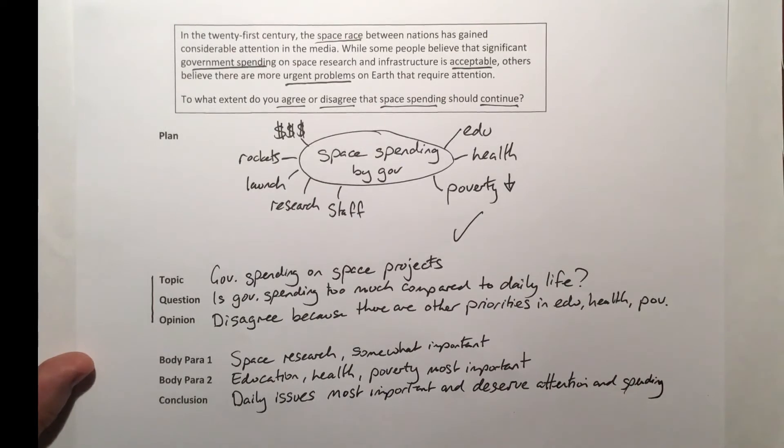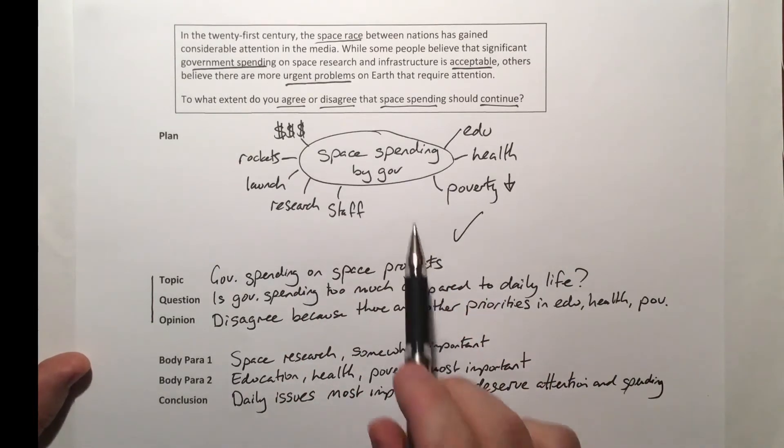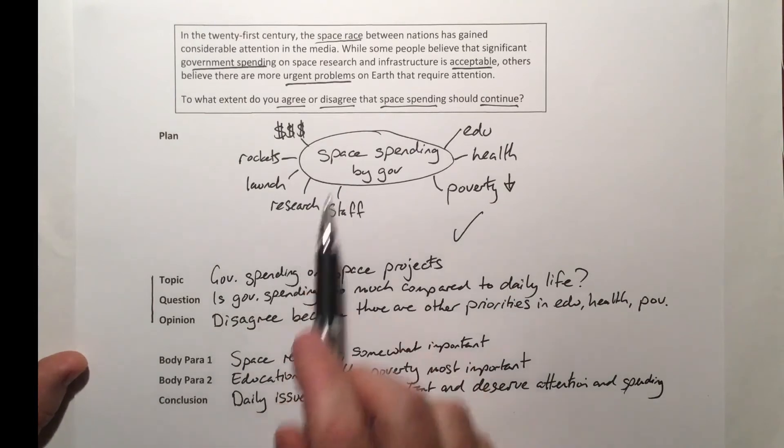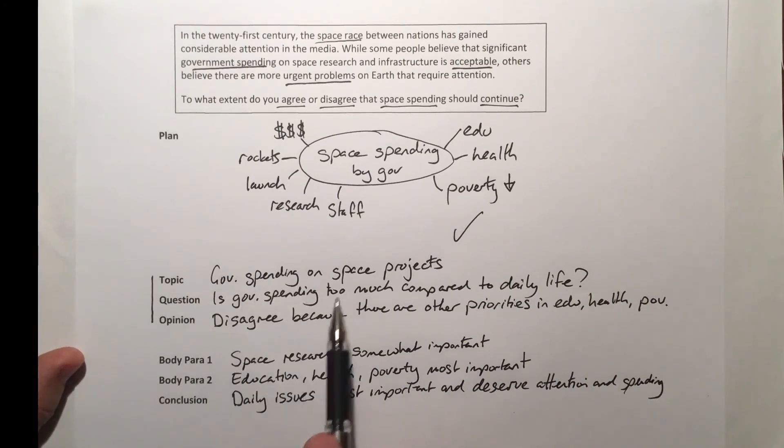There we go, that's quite a neat structure. I've spent a little bit of time planning. When I'm planning, I would probably just do this part and then write my introduction based on my understanding. I probably don't need to write out all of this, but if you feel like you need to or you feel like it's important to understand what the topic, question, and opinion are, you can take a couple of notes.